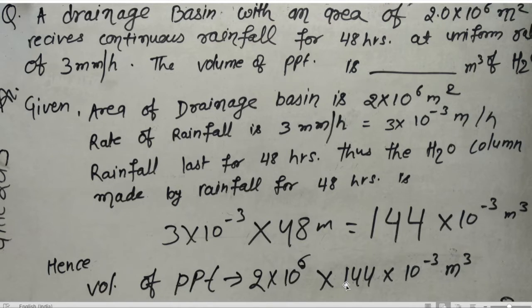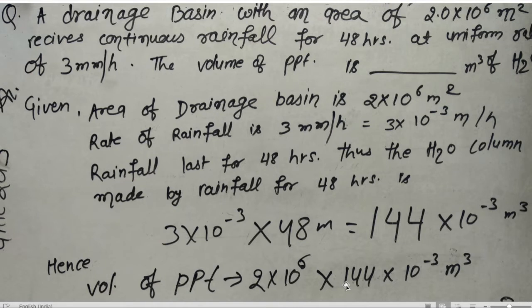The area of the drainage basin is 2×10⁶ meter square. The rate of rainfall is 3 millimeter per hour, which converts to 3×10⁻³ meter per hour. The rainfall lasts for 48 hours. So the water column made by the rainfall for 48 hours is obtained by multiplying the rate — 3×10⁻³ meter per hour — with the total time.